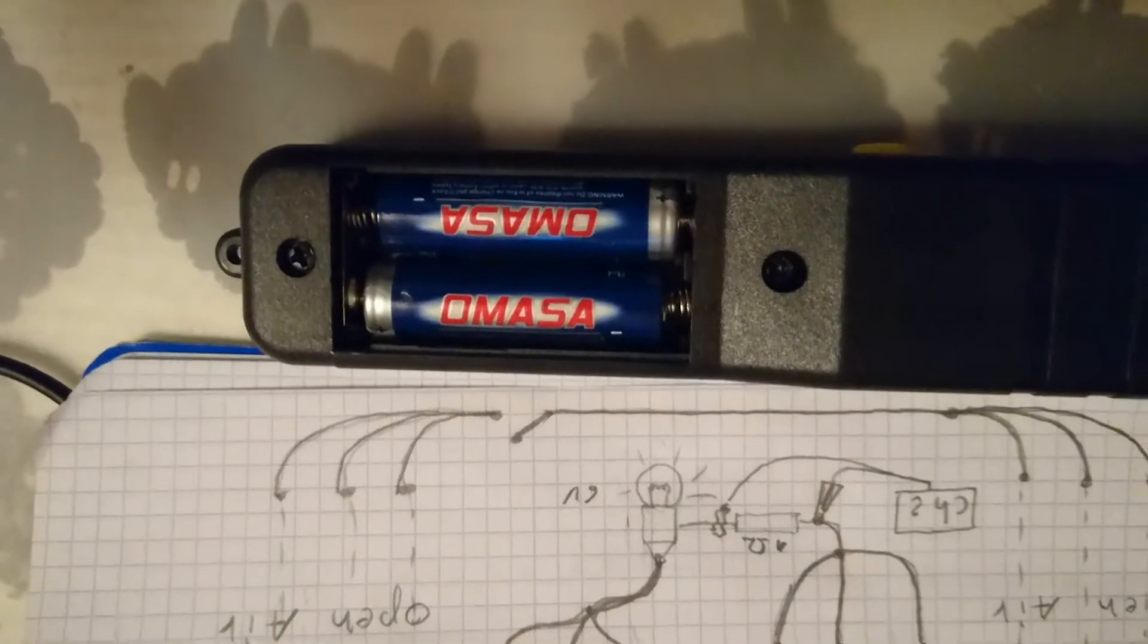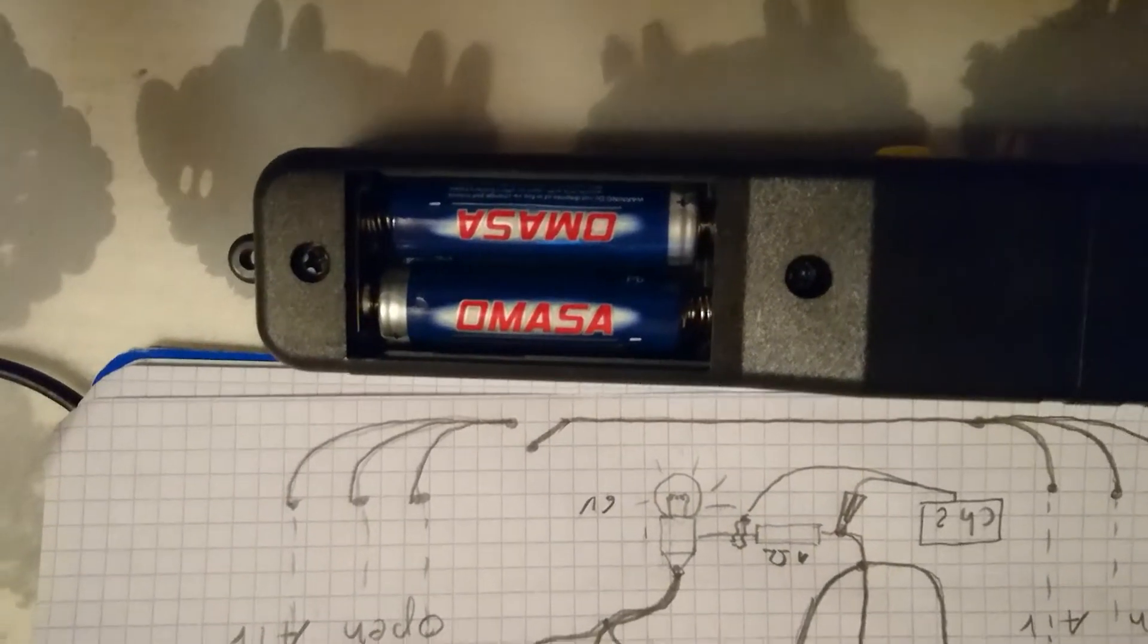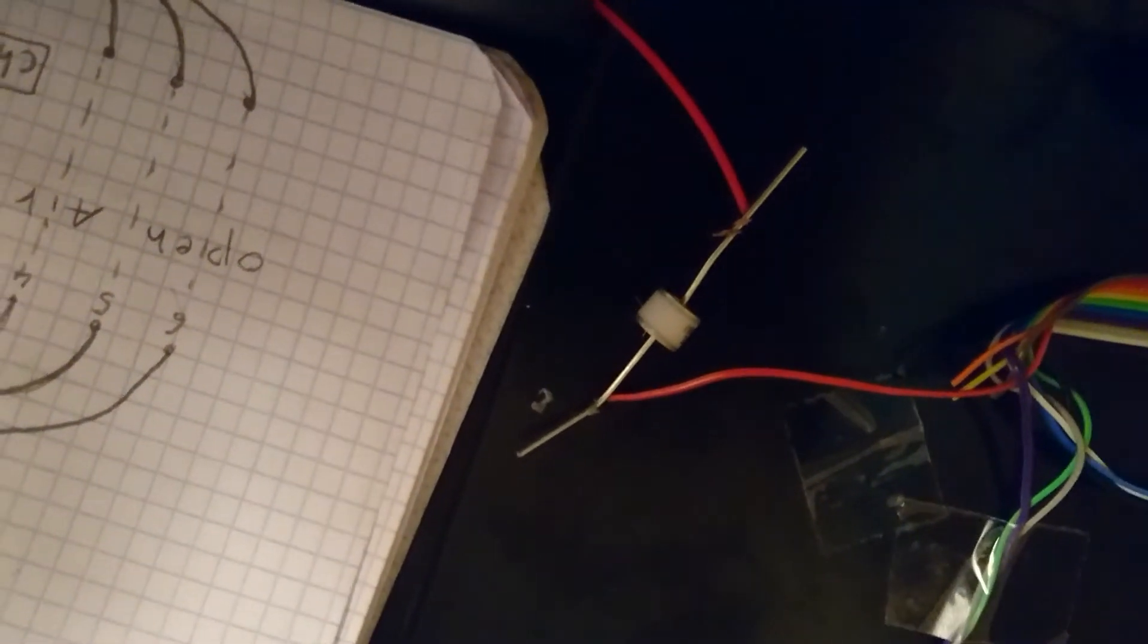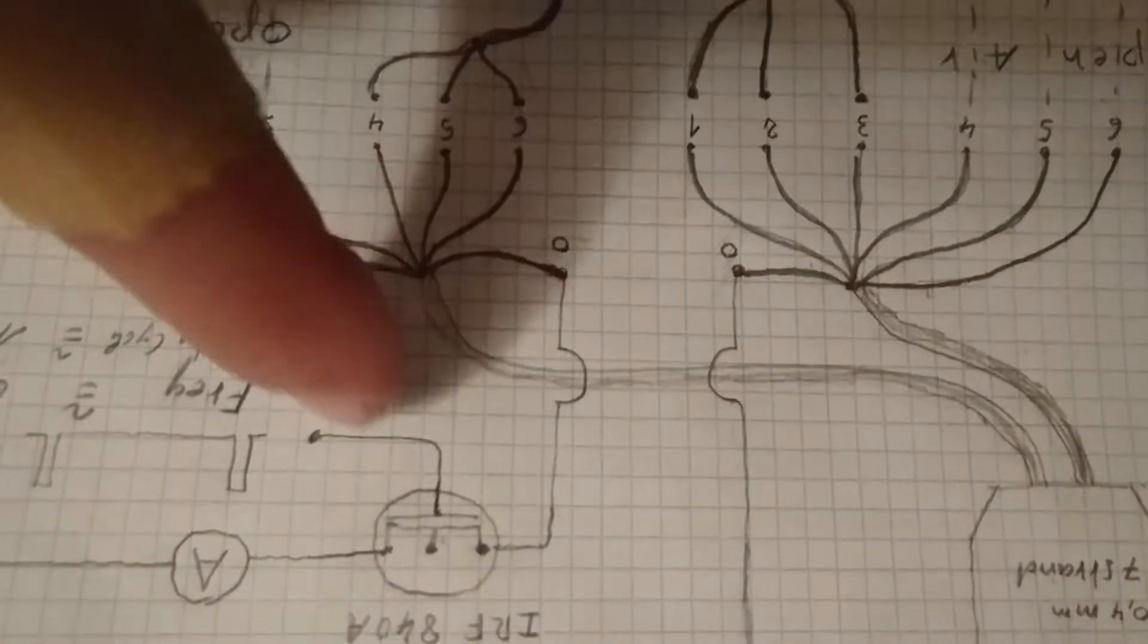Two batteries of 1.5 volts, so it's three volts. Outside this, there's a three-volt GDT of six output volts which goes in the closed loop - this loop here.